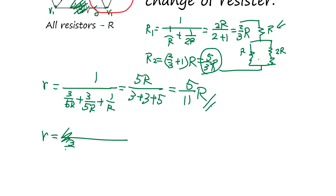Divide by two, so it's 5 over 3R divided by 2, which gives you 5 over 6R. Okay, so the change is this minus this - that's the answer.